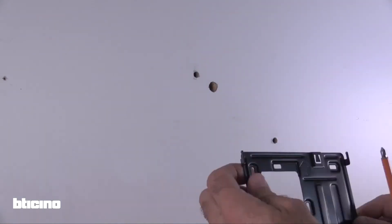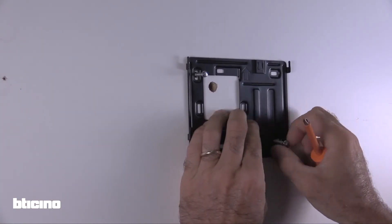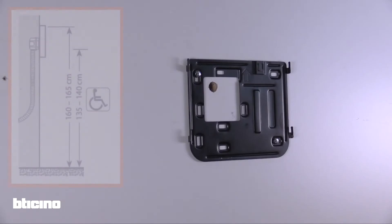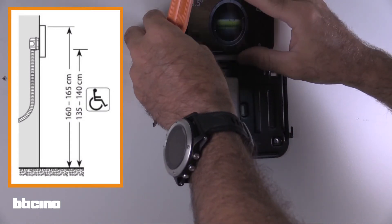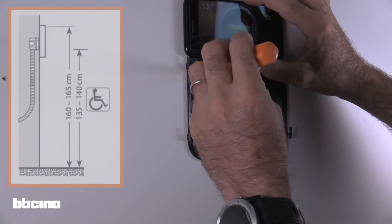Now, let's mount the internal unit. First, fix the metal bracket to the wall. Mount the unit approximately 160cm from the ground and using a spirit level, ensure that it's straight.